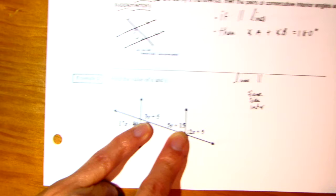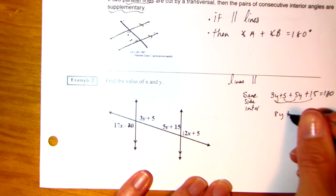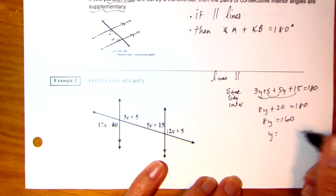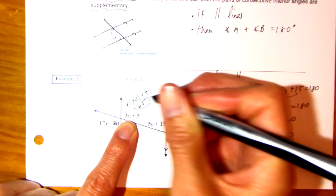What does that tell me? That means they add to 180. So, I'm going to add these up. 3Y plus 5 plus 5Y plus 15 is equal to 180. Combine like terms. 8Y plus 20 is equal to 180. I'm going to subtract 20 from both sides. 8Y is equal to 160. Then divide by 8. Y is equal to 20.